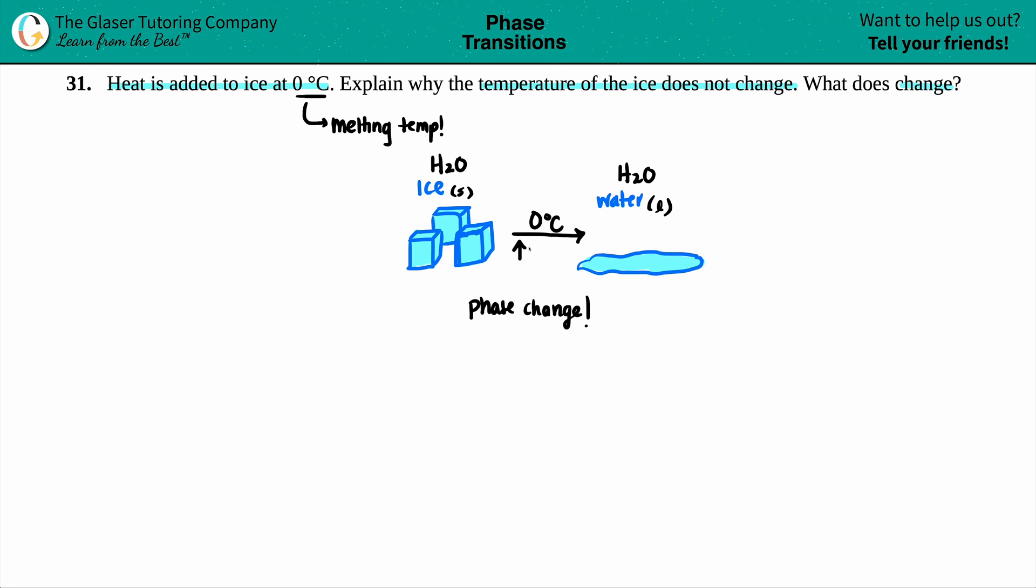So we're increasing the heat. Now the question is, well if we're increasing the heat, why does this temperature stay the same? Why is water going to always melt at 0°C and stay at 0°C during this process even when we're adding heat?